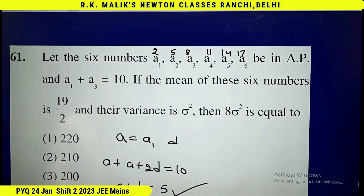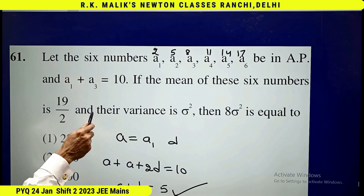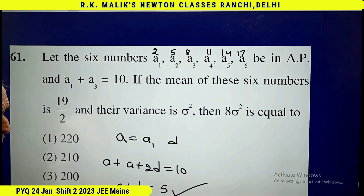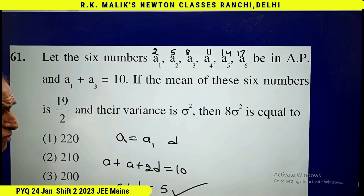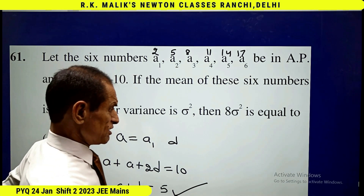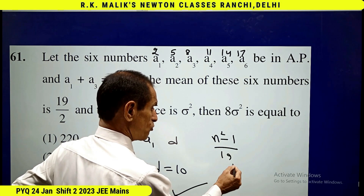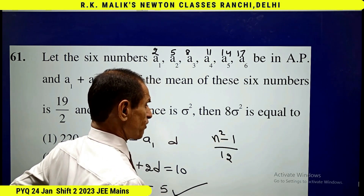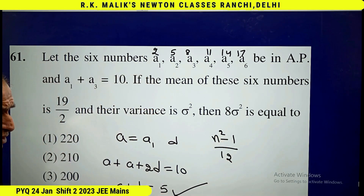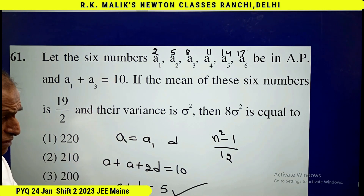Before proceeding further, if I use the normal way of finding the variance, it will be lengthy. For a smart way, remember this formula: the variance of first n natural numbers is n squared minus 1 by 12. This is a standard formula you must know.